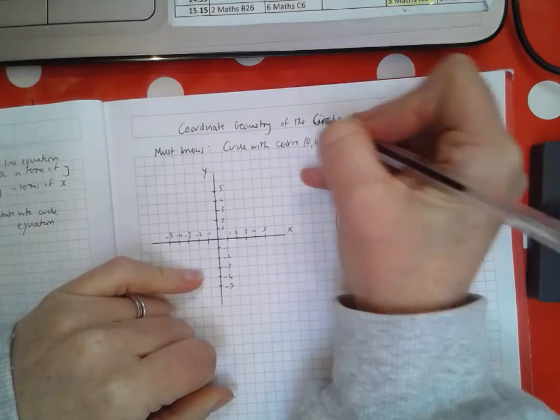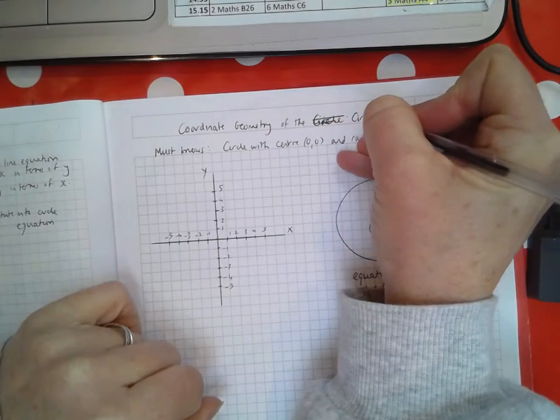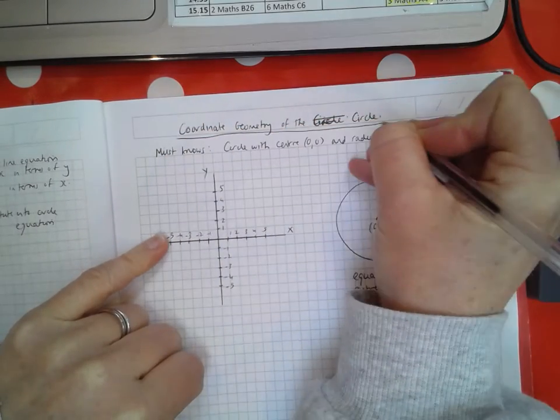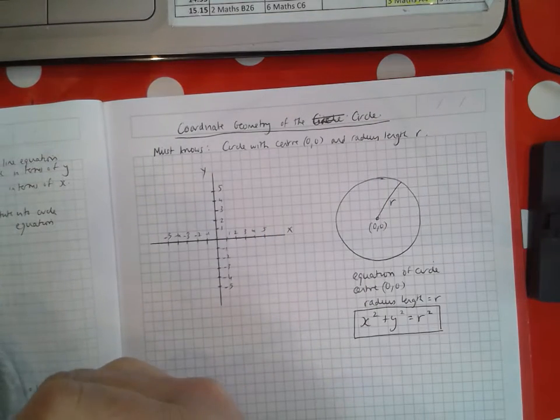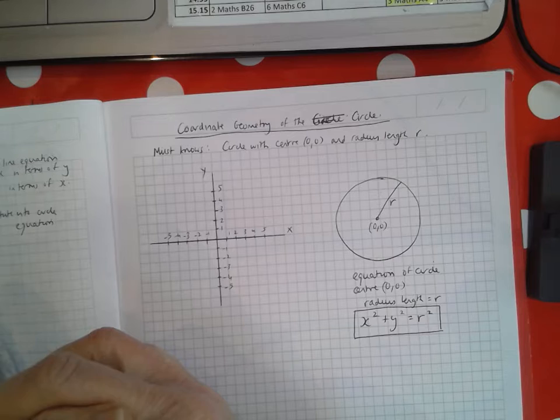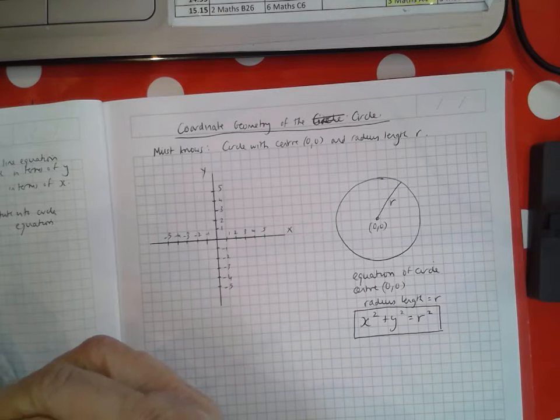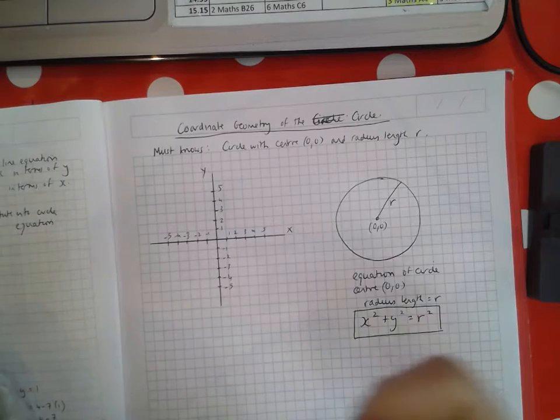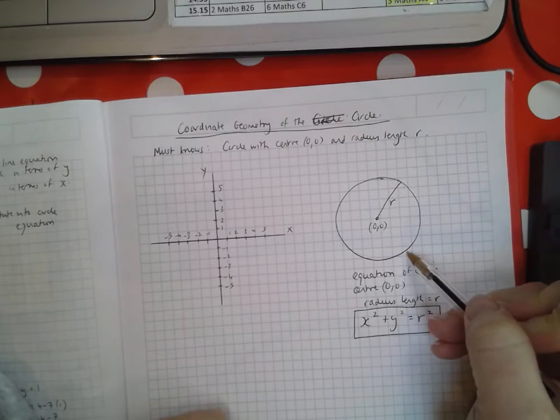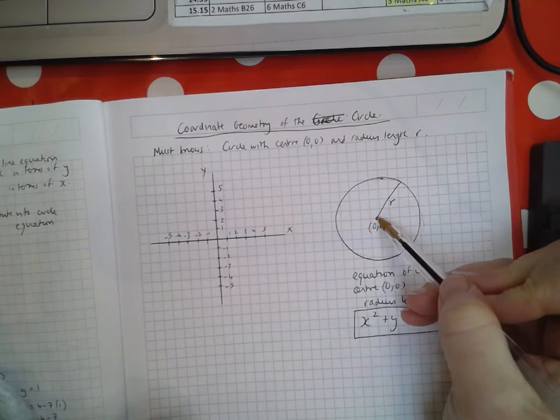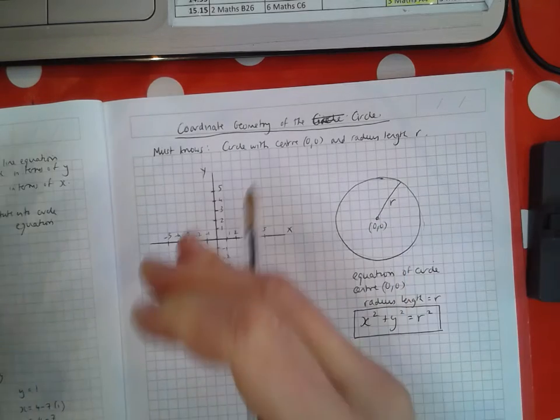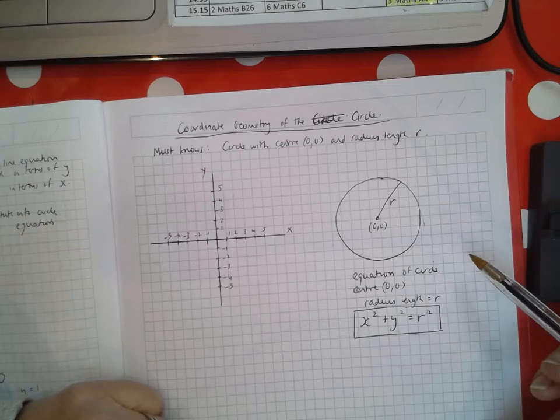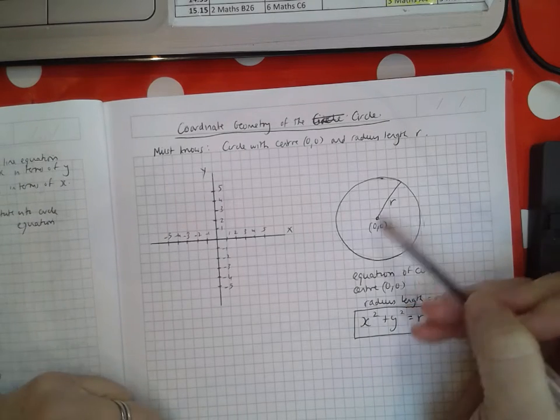The must-know is to be able to find and recognize the equation of a circle that has center (0,0) and radius length r. Here's a circle. What's important about a circle is its center and its radius length. That's what determines where it is on a page and how big it is. Those are the two key facts you need to know.